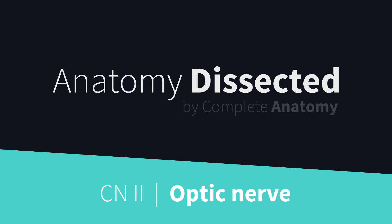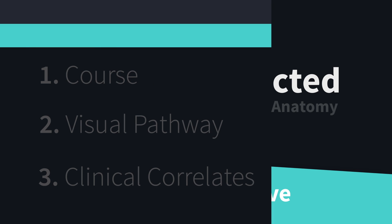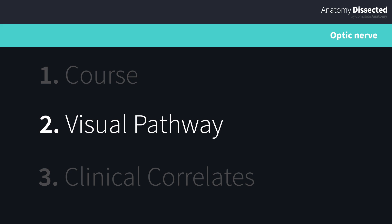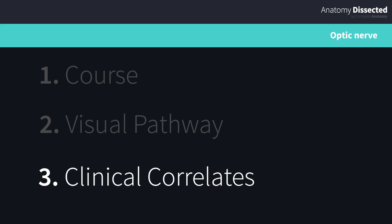Welcome back to a brand new series, Anatomy Dissected by Complete Anatomy. Continuing on with our cranial nerve series, it's now time to take a look at the second cranial nerve, the optic nerve. In this video, we'll first outline the course of this nerve, explore briefly the visual pathway, and then finish off by looking at some of the clinical correlates associated with this nerve.